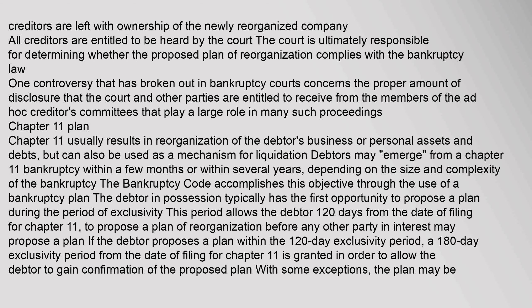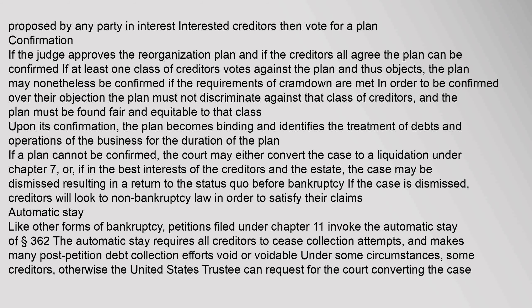The debtor in possession typically has the first opportunity to propose a plan during the period of exclusivity. This period allows the debtor 120 days from the date of filing for Chapter 11 to propose a plan of reorganization before any other party in interest may propose a plan. If the debtor proposes a plan within the 120-day exclusivity period, a 180-day exclusivity period from the date of filing is granted to allow the debtor to gain confirmation of the proposed plan.